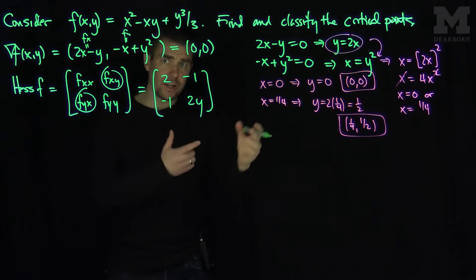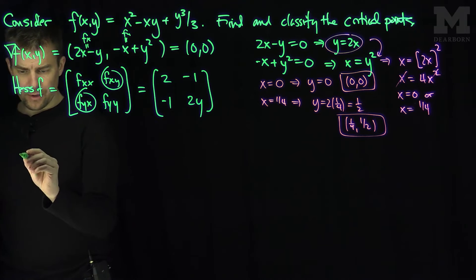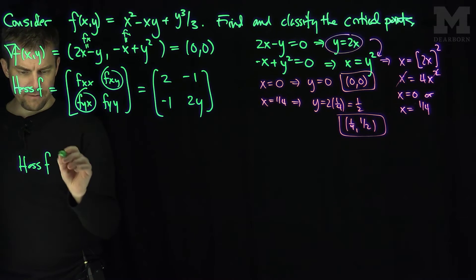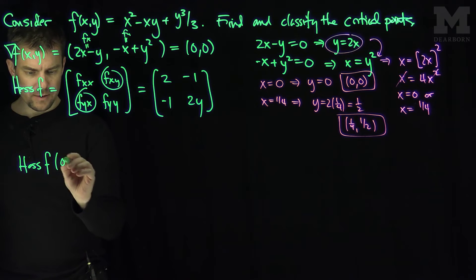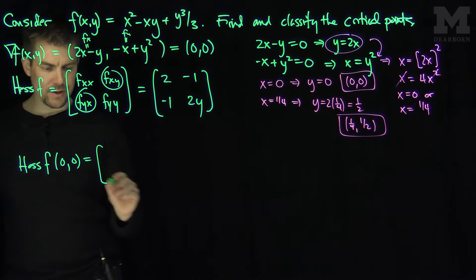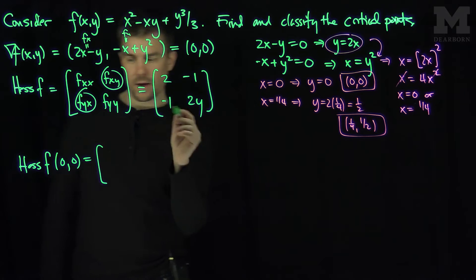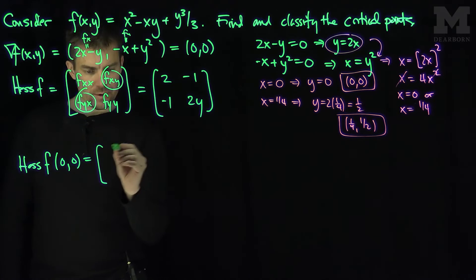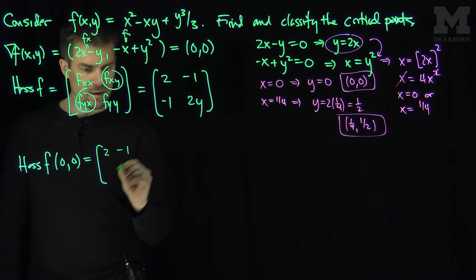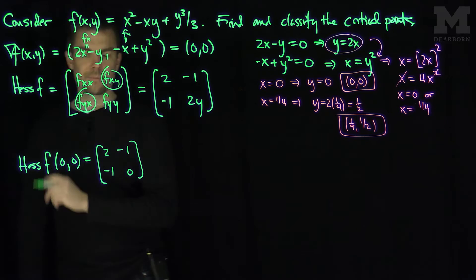Now we look at the Hessian at each critical point. The Hessian of f at (0, 0): plugging in x = 0, y = 0 — there are no x's in this Hessian, only a y — gives the matrix [2, -1; -1, 0].